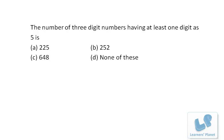Now friends, let's do this question. The number of three digit numbers having at least one digit as 5. That means one digit can be five, two digits can be five, and all three digits can be five.